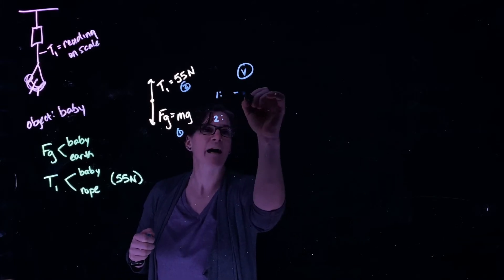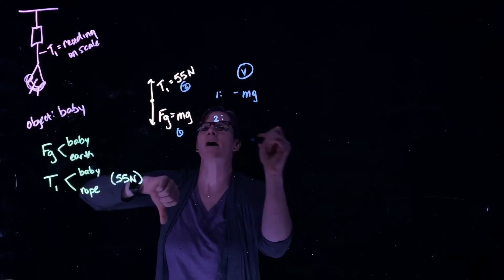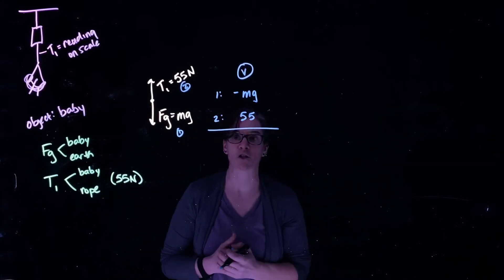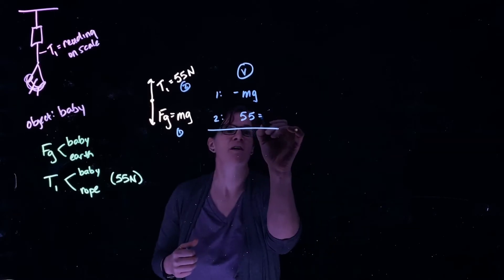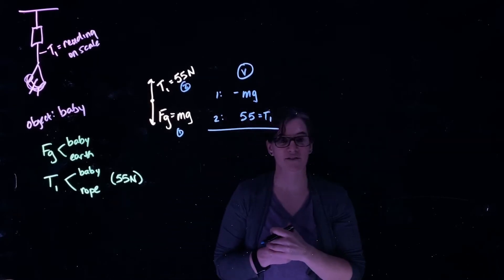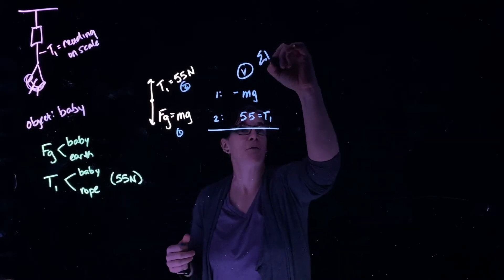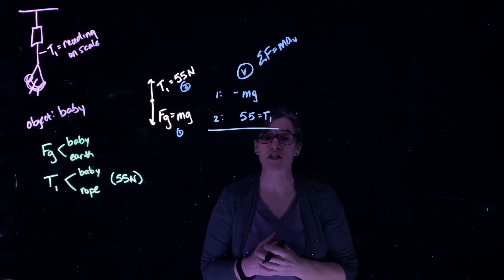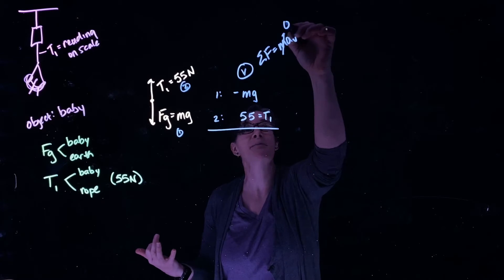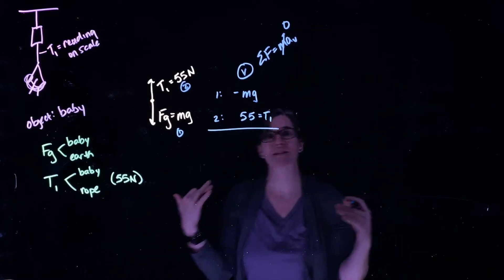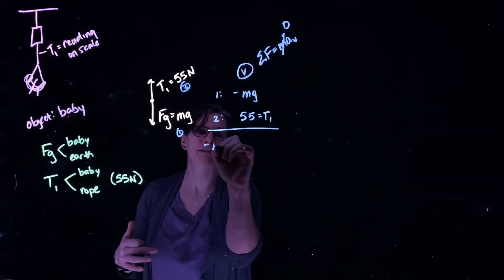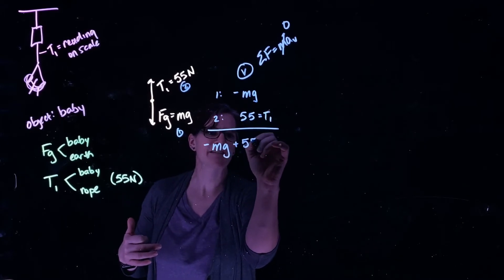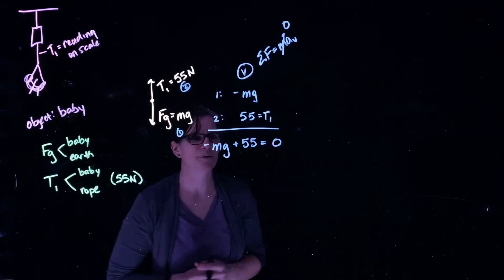Force one is minus mg pointing in the downward direction, and force two is tension T1 equal to 55 newtons. The sum of the forces equals mass times acceleration vertically, but since this object is not changing its motion up or down, that acceleration equals zero. So we end up with minus mg plus 55 equals zero.